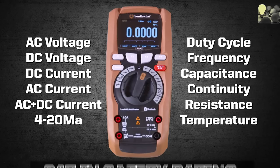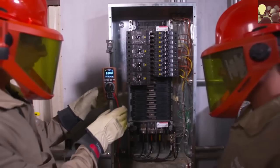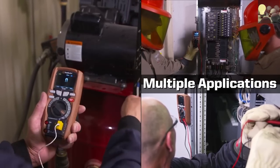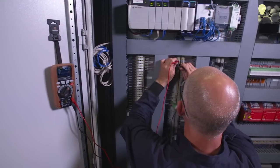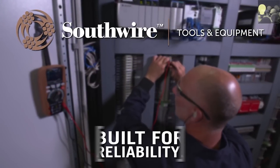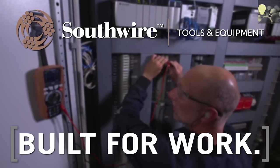With 12 measuring functions and a Category 4 safety rating, the 15190T can be used in a wide range of applications. It's the perfect choice for the maintenance professional. Southwire. Built for durability. Built for reliability. Built for work.